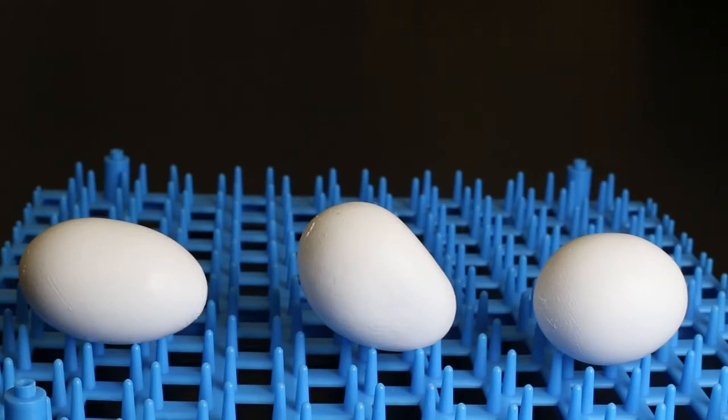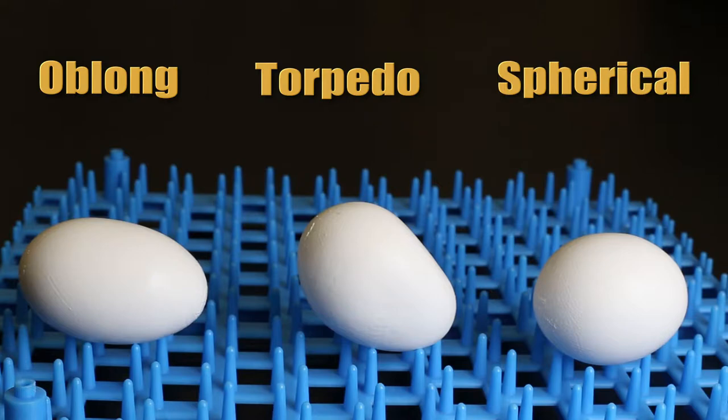These eggs all have some type of shape flaw. They are either oblong, torpedo-shaped, spherical, or misshapen in some other way.